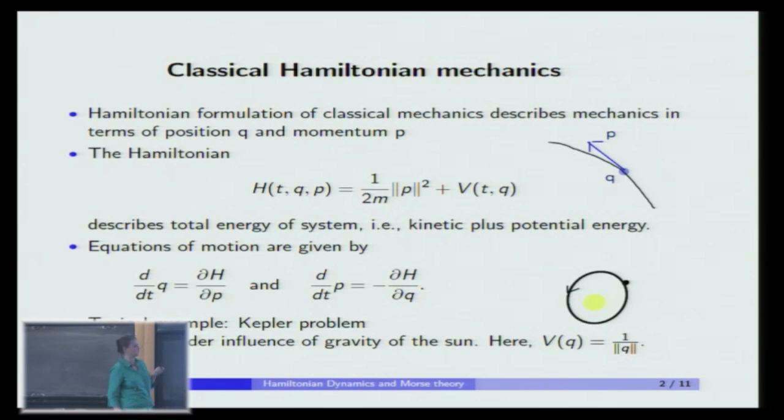So it comes from physics, and Hamiltonian formulation is one way to formulate classical mechanics in physics, just formulated in terms of position of a particle q and momentum p—you can think of it as a velocity vector, just tangent to the path. In classical Hamiltonian dynamics, the Hamiltonian is of the form 1/(2m) times ||p||^2 plus some potential V(t,q). It may be time dependent and depends on the position of the particle. And this is the total energy of the system, and you can really think about it as kinetic plus potential energy.